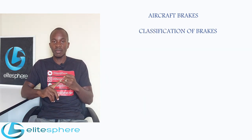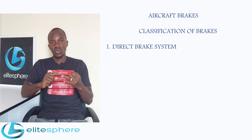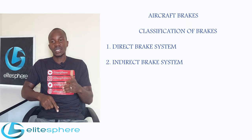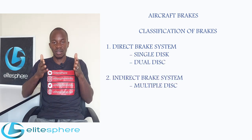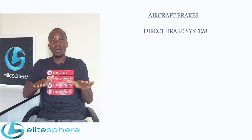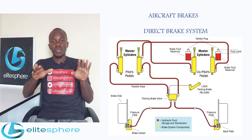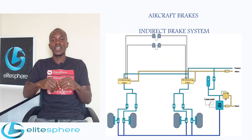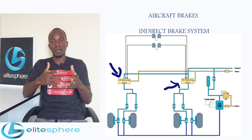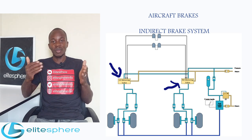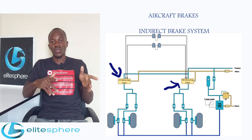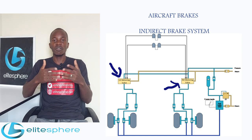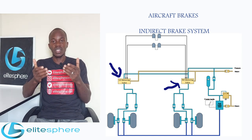The two main classifications are: one, the direct braking system, and two, the indirect braking system. The single disc and the dual disc braking system fall under the direct braking system. For a direct braking system, the braking pressure applied on the rudder pedals is the pressure directly applied on the brakes. For an indirect braking system, there is a brake control valve or brake control metering valve that modulates the pressure from the pressure source to the brake unit.